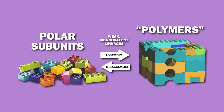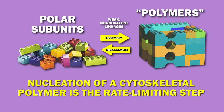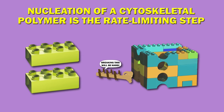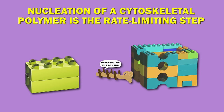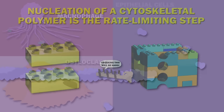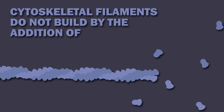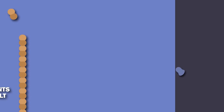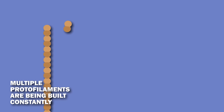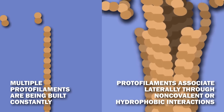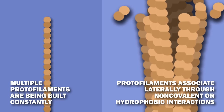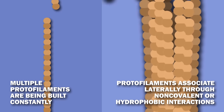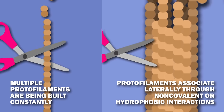These macromolecular components of the cytoskeleton filaments are constantly in flux, and nucleation of a cytoskeletal polymer is the rate-limiting step, since the small initial aggregate is less stable and more likely to fall apart. It is important to note that cytoskeletal filaments do not build by the addition of a single subunit at a time. Multiple protofilaments are being built constantly, which then associate laterally through noncovalent or hydrophobic interactions. This composite structure is much harder to break.